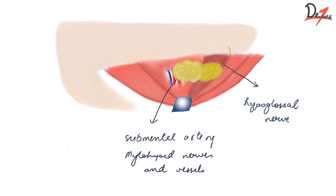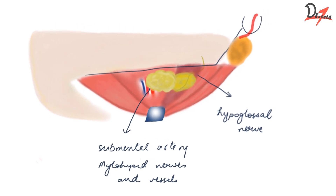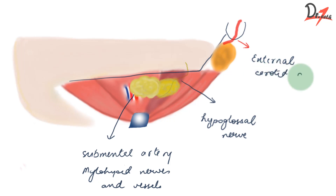Coming to the posterior part of the triangle — you remember we had the mastoid process and the floor of the mouth extending from here across. So what all do we have here? Looking first at the superficial structures: we have the lower part of the parotid gland, and we also have the external carotid artery before it enters the parotid gland.